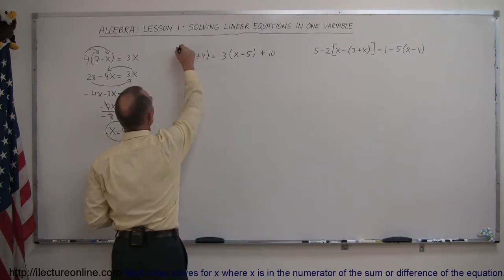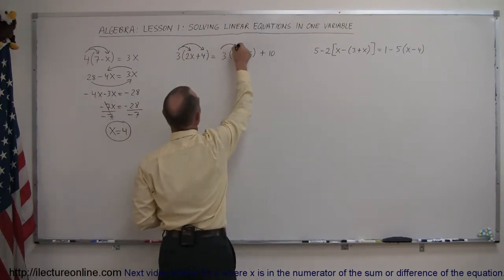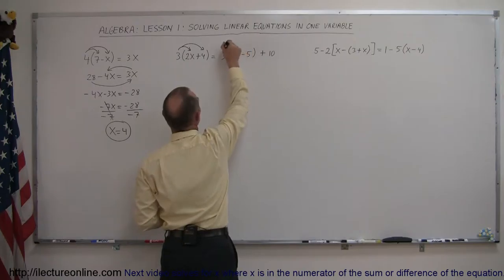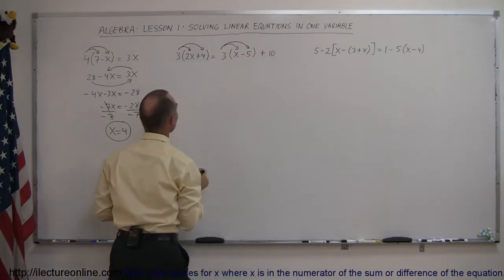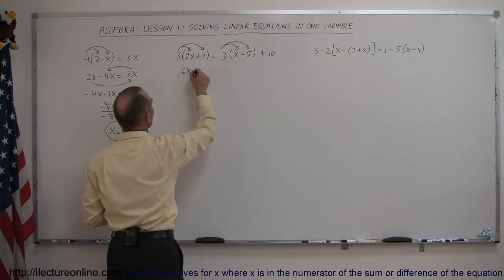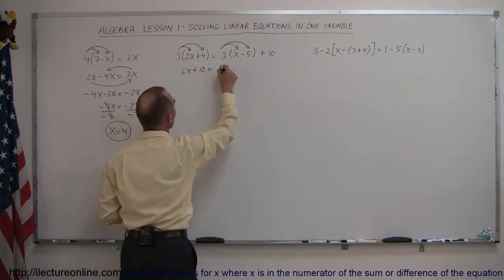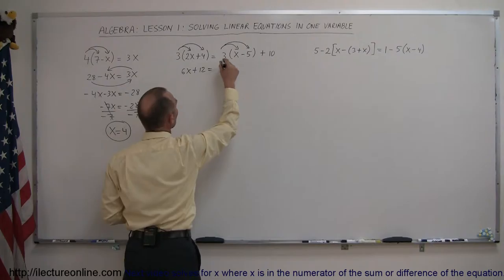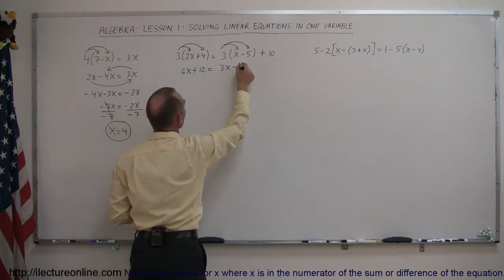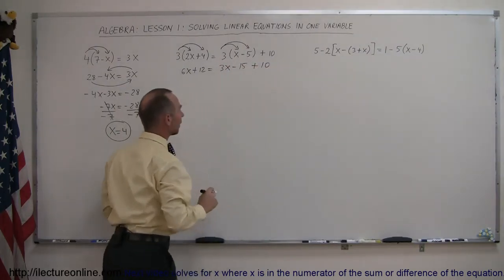We multiply the 3 times the 2x, the 3 times the 4, then the 3 times the x, and the 3 times the negative 5. So 3 times 2x is 6x, 3 times 4 is plus 12, equals 3 times x which is 3x, and 3 times negative 5 is minus 15, and then we still have the plus 10 on the right side.